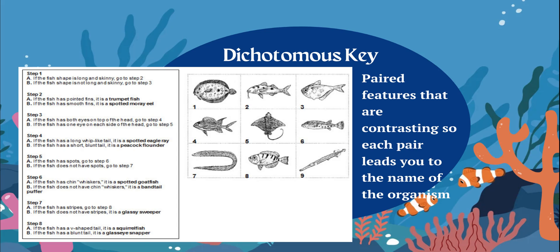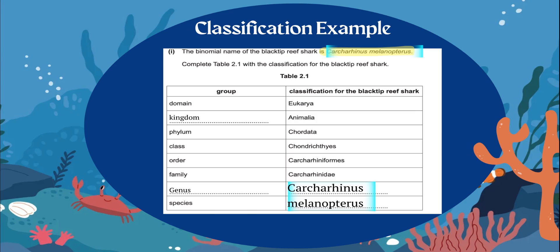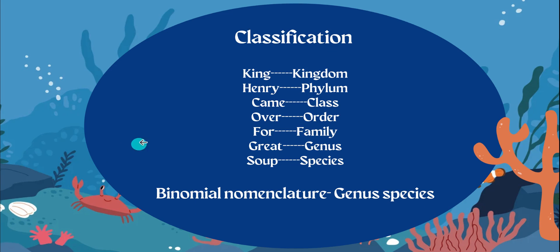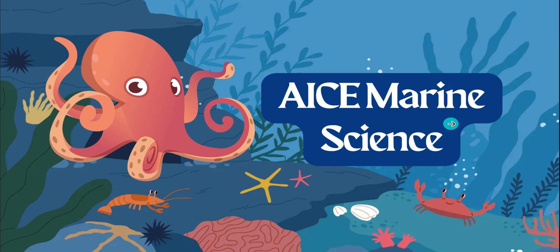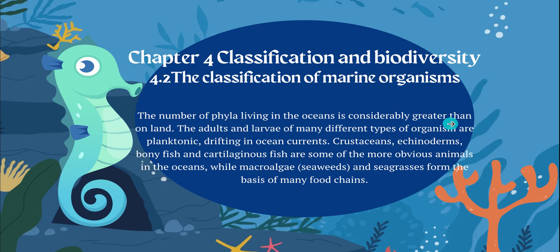At this point, you should already know kingdom, phylum, class, order, family, genus, species, and you should know that the genus and the species make up the scientific name. That's called binomial nomenclature.